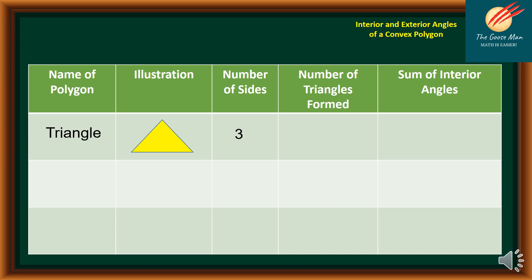The number of triangles formed is only one. Therefore, the sum of the interior angles is one times 180 degrees, which is equal to 180.